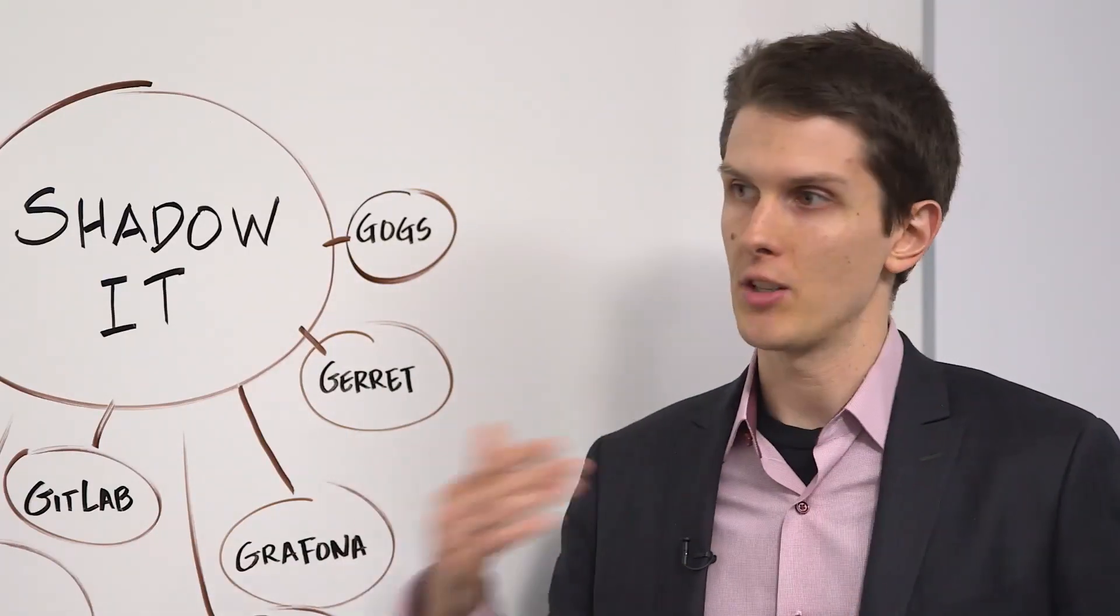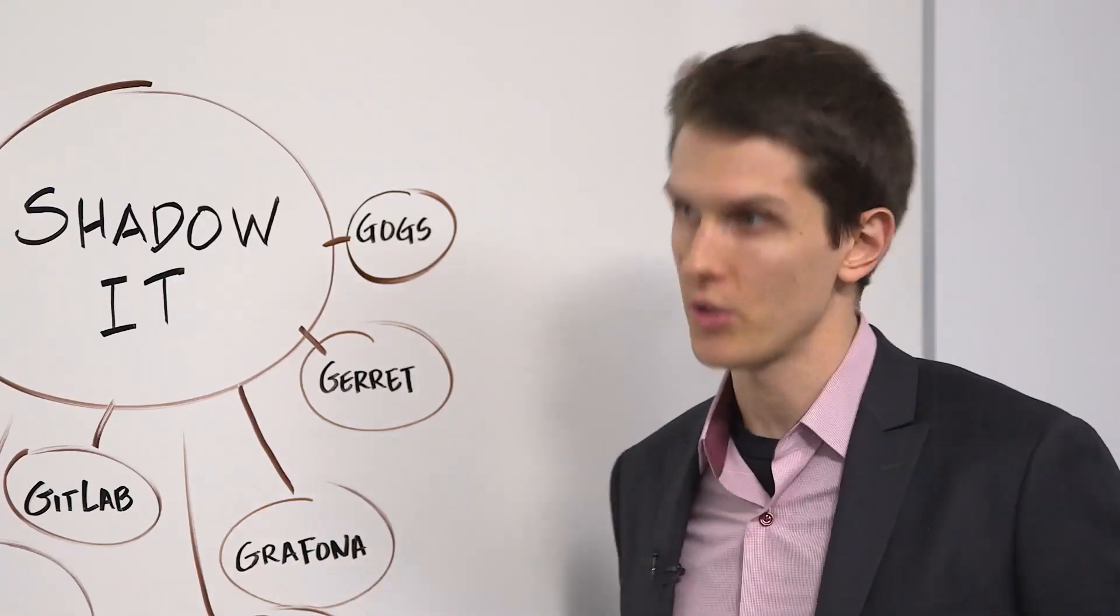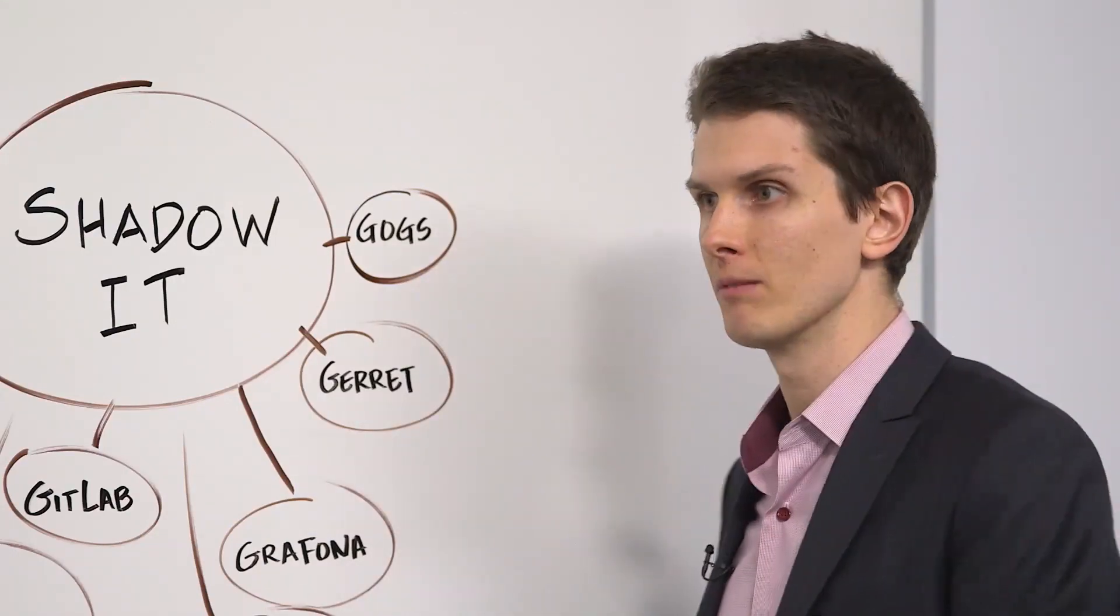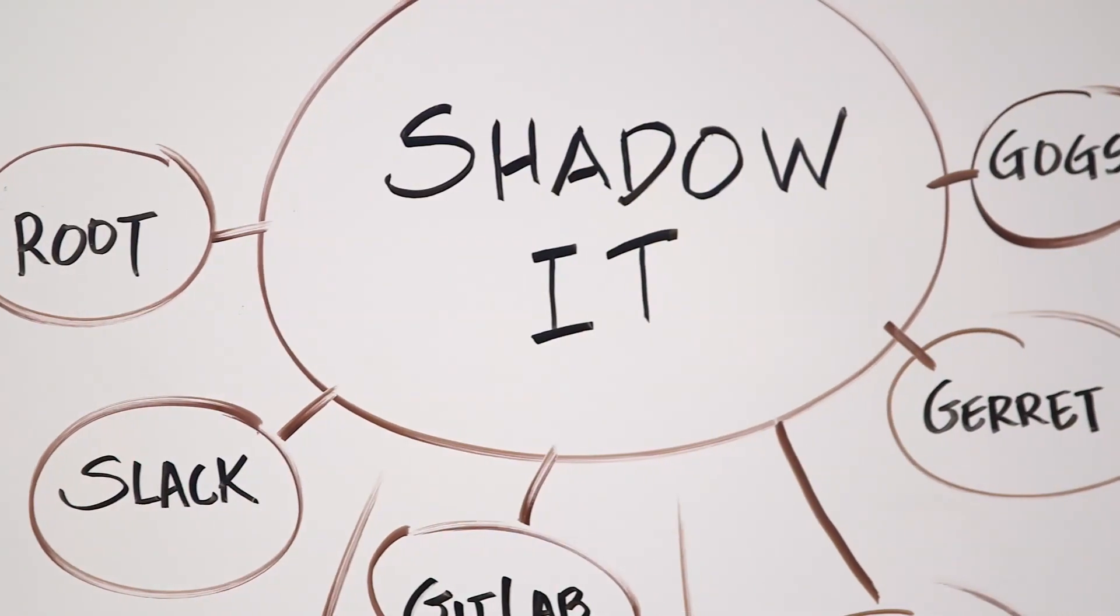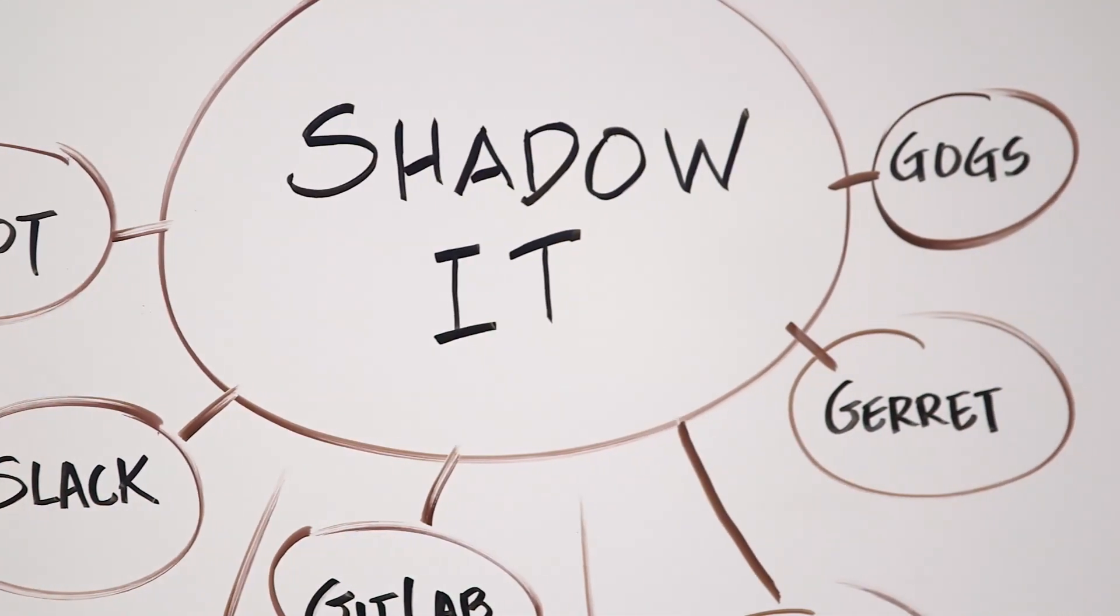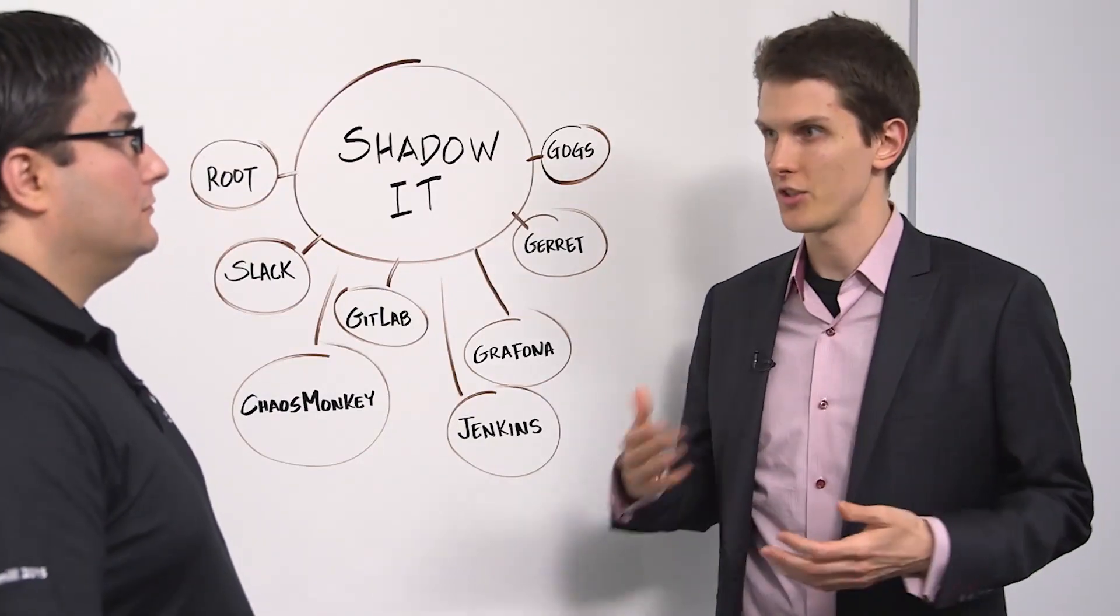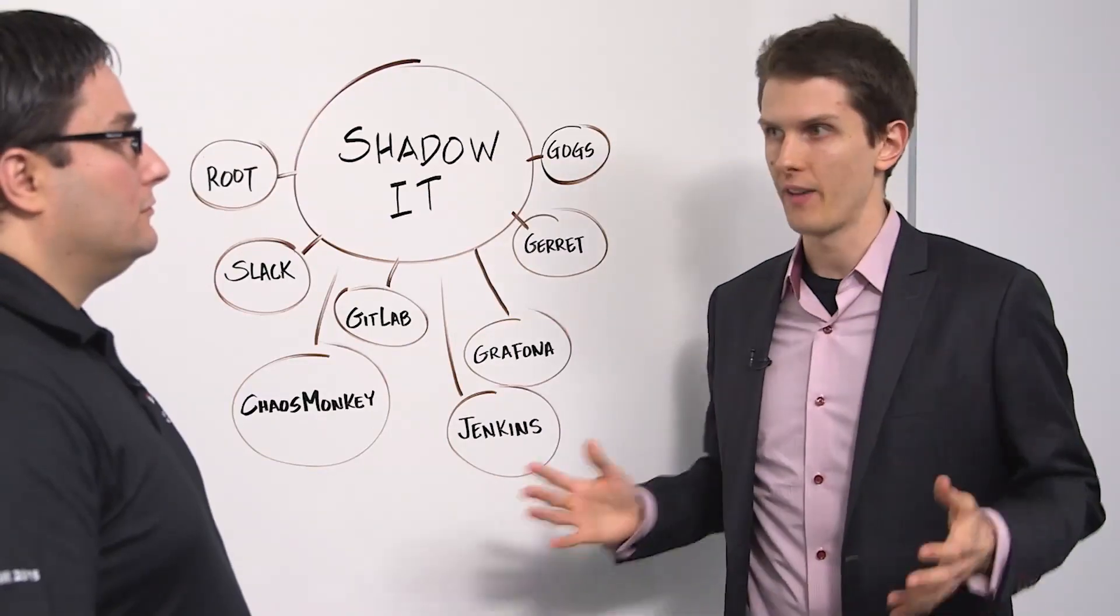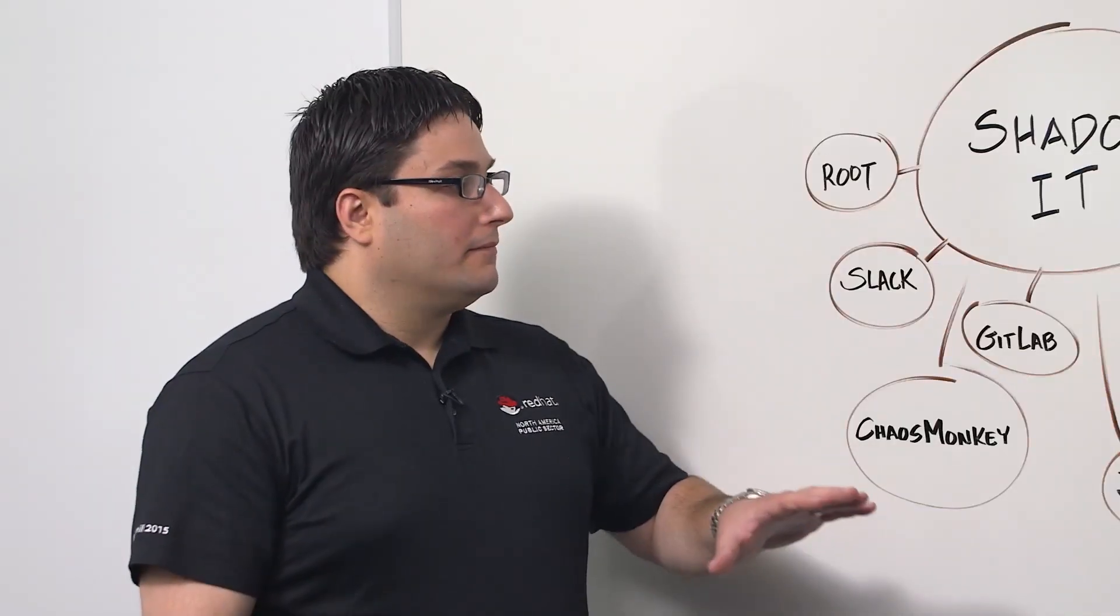And then once you start getting that inventory and figure out what things are being used for, who owns them, a lot of times you're at least going to be tied with who owns the server. So at the very worst, if it's just named server ABC owned by Joe, you can go over to Joe's desk and ask what is this server for. But you don't want to blame them for this server being created. They didn't create it for malicious purpose, they created it to make their job easier, to get their job done for you. So you're just finding out what it's for for now, and then later we're going to start dealing with it.